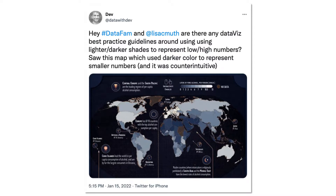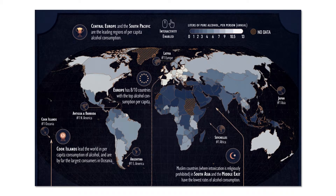You can see here in this visualization — I'll make it a little bigger — take a look at the top right of the graph, in the legend. We have zero on the left of that little legend in the darkest blue color, and then the higher numbers, 10.5 to 13, in the white color. And so that's a little counterintuitive.